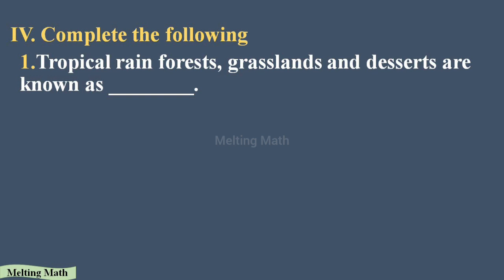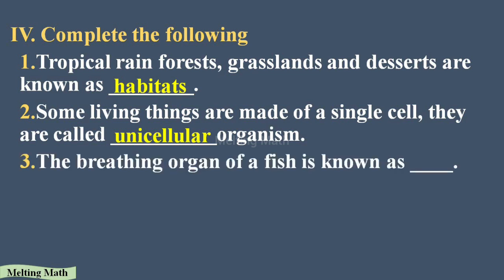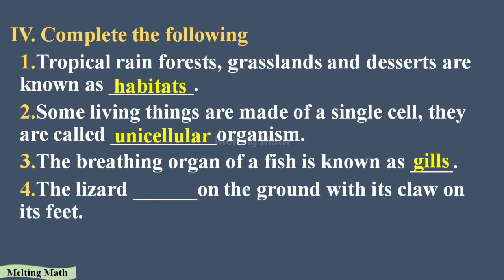Section four: complete the following. Question one: tropical rainforest, grassland, and deserts are known as habitats for some animals. Question two: some living things are made of a single cell; they are called unicellular organisms. Question three: the breathing organ of a fish is known as gills. Gills is the special respiratory organ for fish.